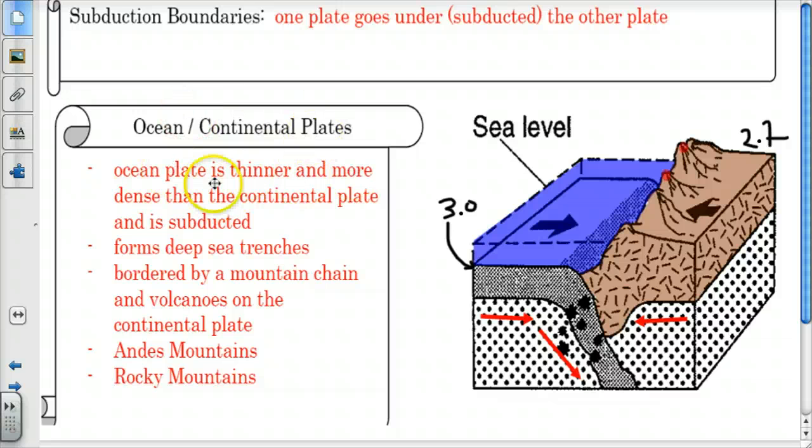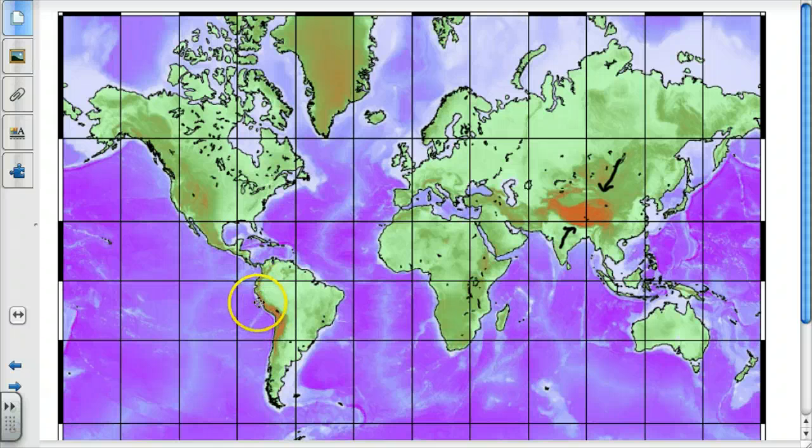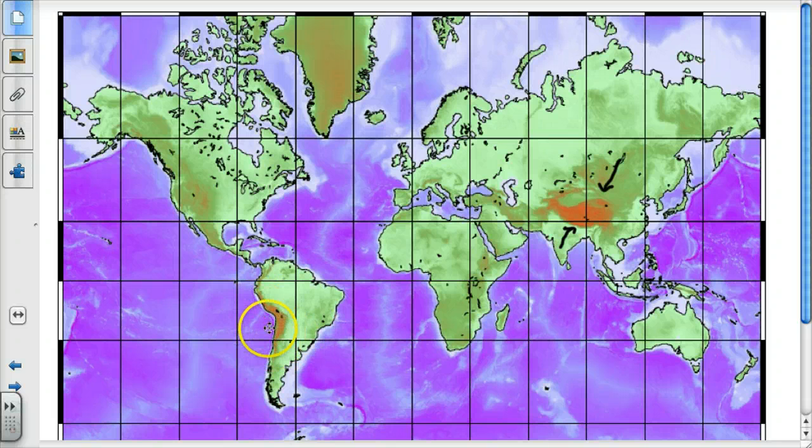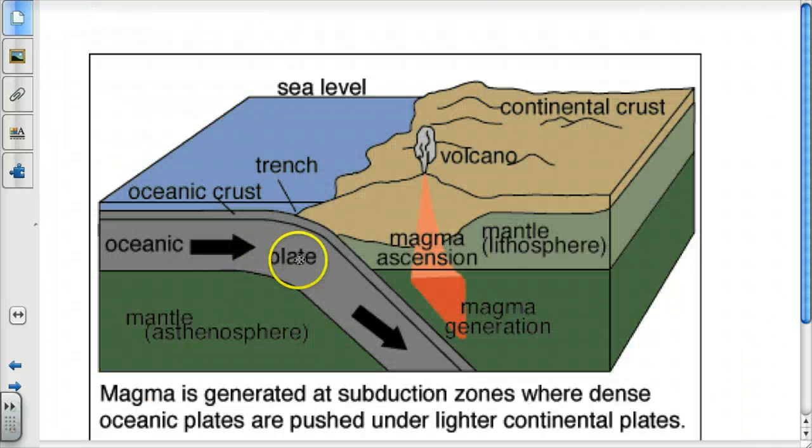We have ocean-continent collide. The ocean plate's thinner and more dense, so it goes underneath. It forms a trench right here along the edge of that boundary because this is going down in, pulling down the rock and forming the deepest parts of the ocean. It's bordered often by a mountain chain and volcanic mountains along the continental edge. The Andes Mountains in South America and the Rocky Mountains are great examples of this. This is where we're talking right here. You have the deepest part of the ocean right here next to some of the tallest mountains in the world. So you have both deep ocean and tall mountains there.